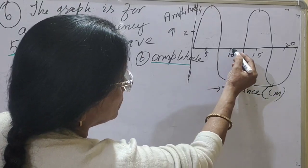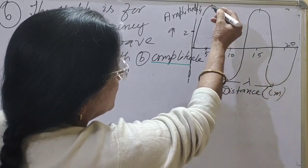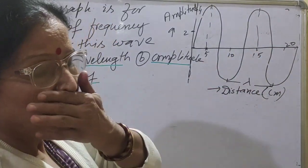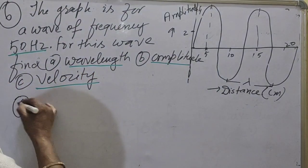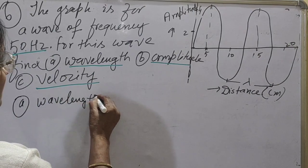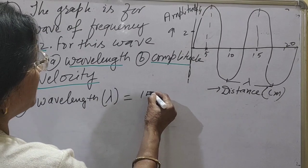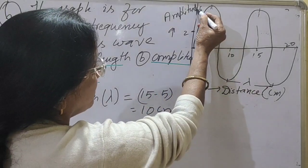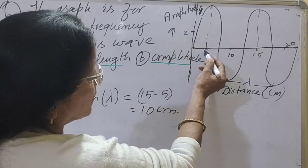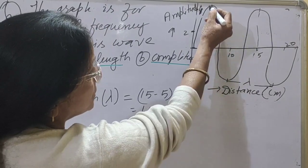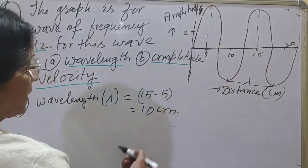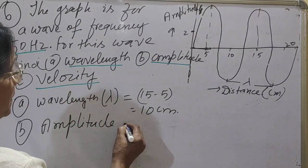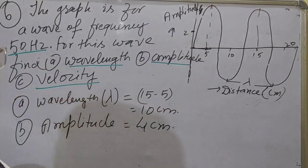From the graph, the distance between two consecutive crests is 15 minus 5 equals 10 centimeter. That is the wavelength — so the wavelength of the wave is 10 centimeter. Now for amplitude: the maximum displacement of molecules of the medium from the mean position is 4 centimeter, so the amplitude is 4 centimeter.